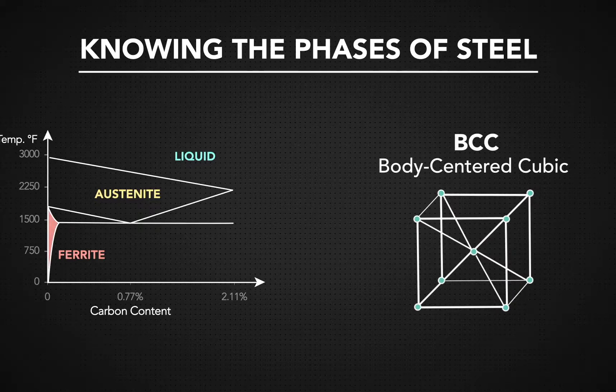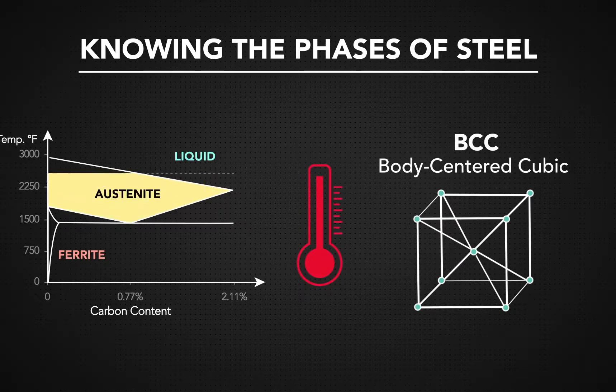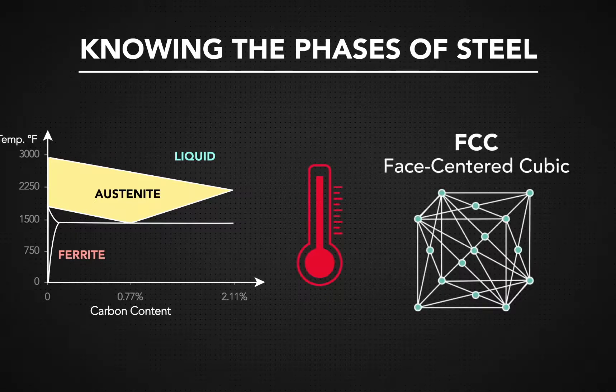Once the steel's temperature rises to 1,340 degrees Fahrenheit, it enters into austenite phase, during which the steel takes on a face-centered cubic, FCC, structure.